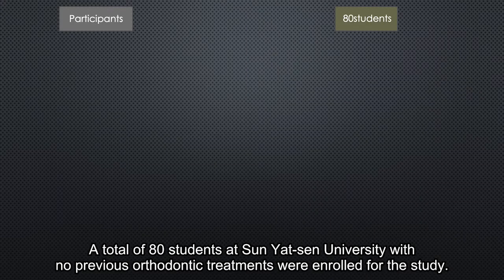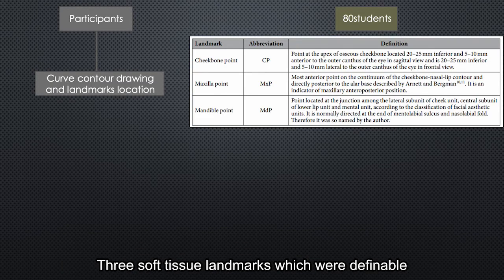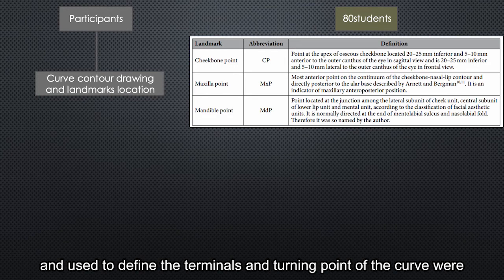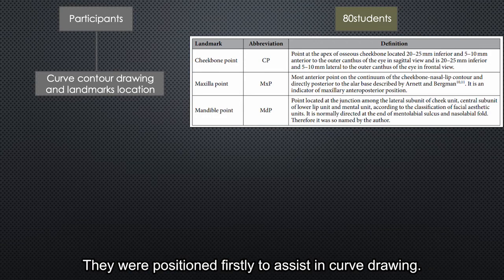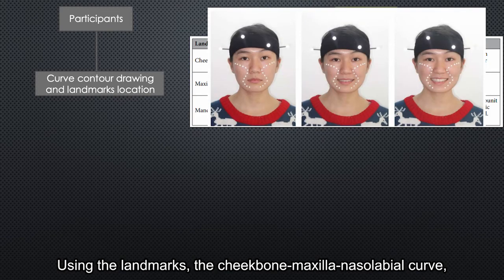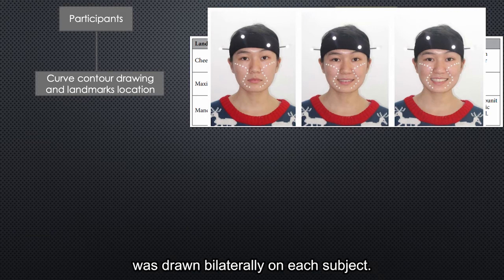A total of 80 students at Sungkyunkwan University with no previous orthodontic treatment were enrolled for the study. Three soft tissue landmarks — which were definable and used to define the terminal and turning points of the curve — were the cheekbone point, the malar point, and the mandible point. They were positioned firstly to assist in curve drawing. Using these landmarks, the cheekbone-malar-nasolabial curve, consisting of the cheekbone contour and nasolabial folds, was drawn bilaterally on each subject.